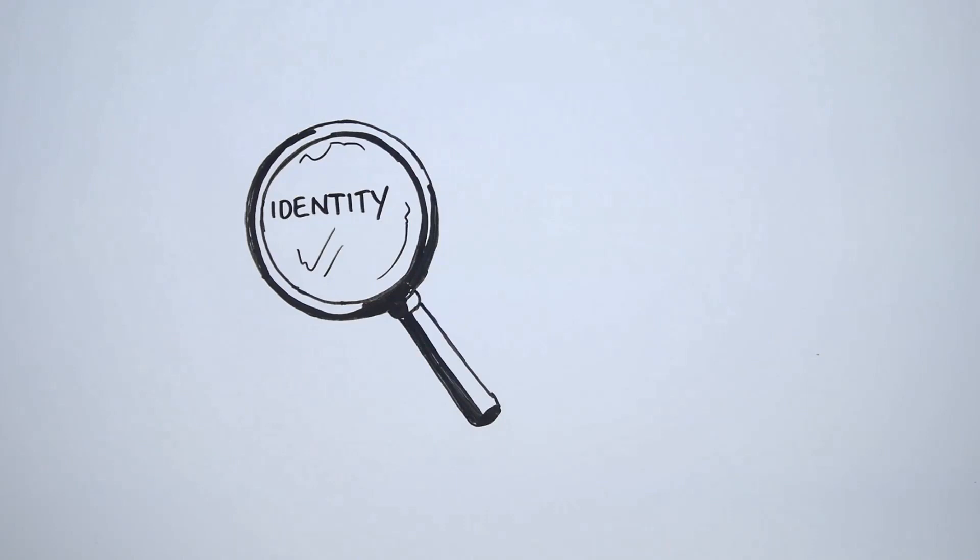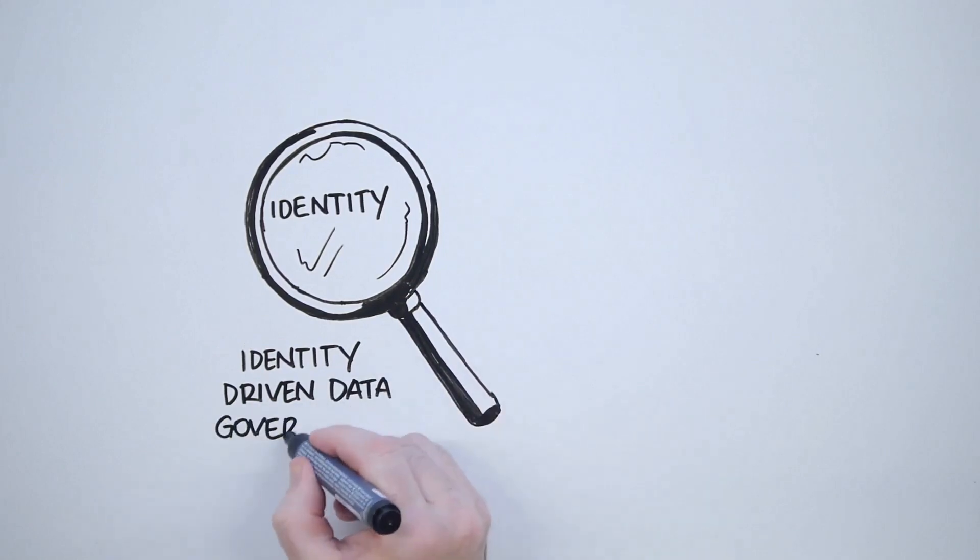The key route to achieving this goal is to focus everything around identity and using it to do identity-driven data access governance. To manage the risks associated with unstructured data enables me to do exactly that.